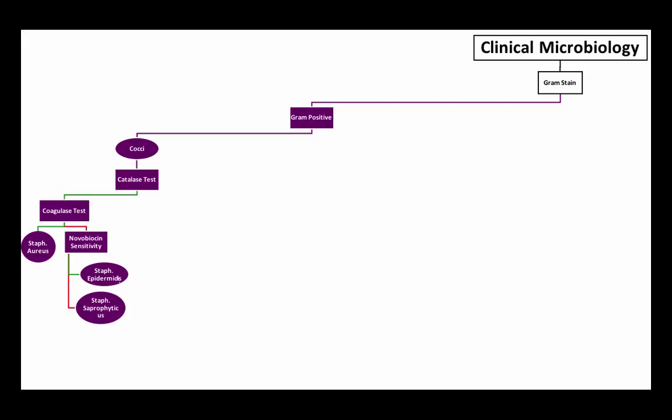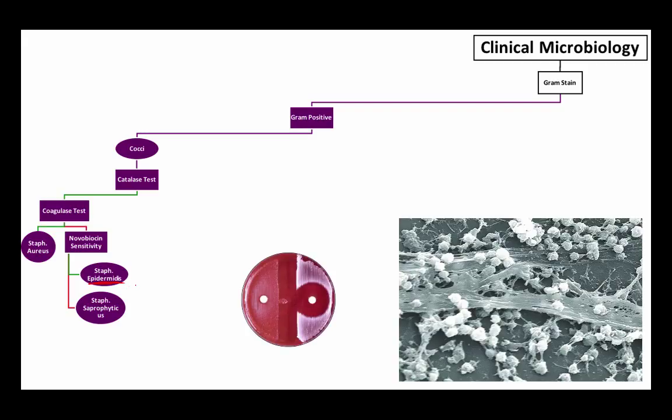The other two staphylococci we can talk about here are Staph epidermidis, a common contaminant in blood cultures and it forms a biofilm on medical devices like catheters, and Staph saprophyticus, a common cause of UTIs among newlyweds.